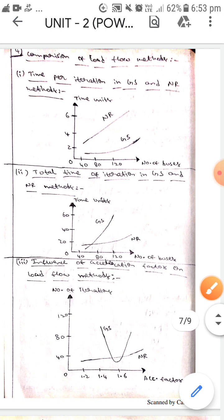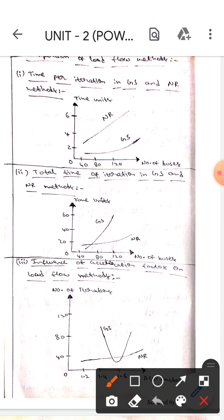Whereas the next comparison is total time of iteration in GS and NR methods. Here in the x-axis we'll take number of buses, whereas in the y-axis we'll take time units. The GS graph will be like this whereas NR graph will be like this.